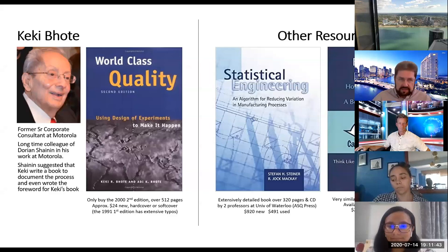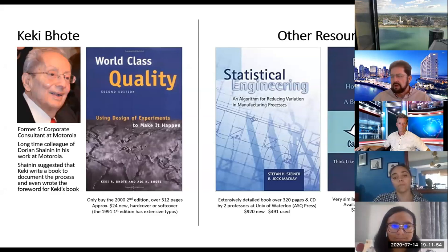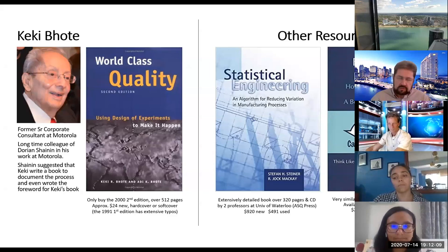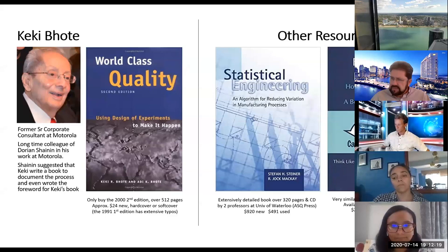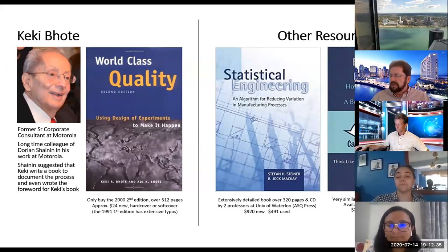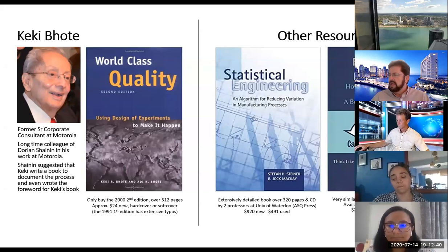There are two versions of World Class Quality. Don't buy the 1991 edition — it's full of errors. Get the 2002 second edition, which is 512 pages long, available at Amazon for around $24. Another resource is Statistical Engineering from ASQ Press, written by two professors I met while working for BlackBerry, where I created online web-based training in Six Sigma, Lean, and Shannon Methods. That one is steep — $920 new or $491 used. There's also Reasoning Backwards by Greg Young, available at youngassociatesinc.com for around $24.95.